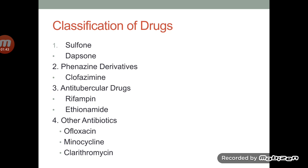These are the various classes of drugs which are used in the treatment of leprosy. First is the chemical class sulfones, under which the drug that comes is Dapsone. Second chemical class is phenazine and clofazimine comes under this class. The antitubercular drugs like rifampicin and ethionamide, and the various antibiotics like ofloxacin, minocycline and clarithromycin.